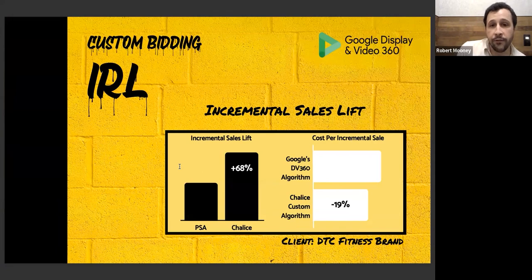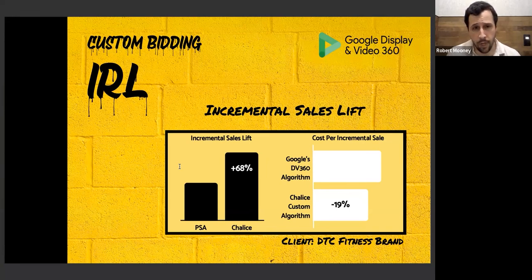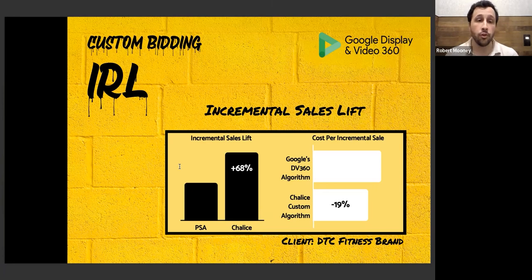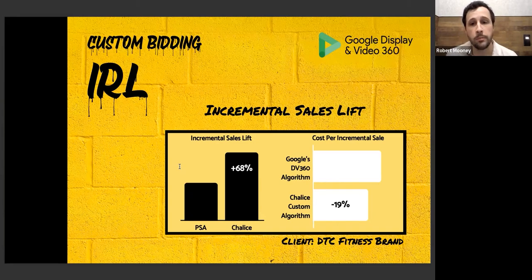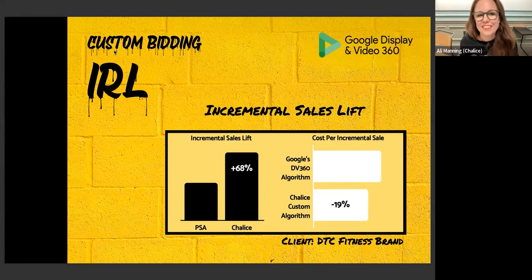Here's a case study for incremental sales lift. This is a DTC fitness brand. We looked at all the different site floodlight activities — 50-odd floodlight activities — plus all different bid stream features available, and put together a custom script that drove a 68% incremental sales lift over a PSA and a 19% reduction in cost per incremental sale compared against the Google DV360 platform algorithm.